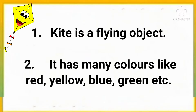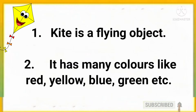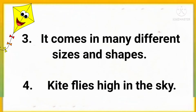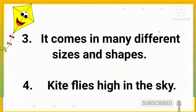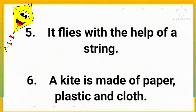Kite is a flying object. It has many colors like red, yellow, blue, green etc. It comes in many different sizes and shapes. Kite flies high in the sky. It flies with the help of a string.